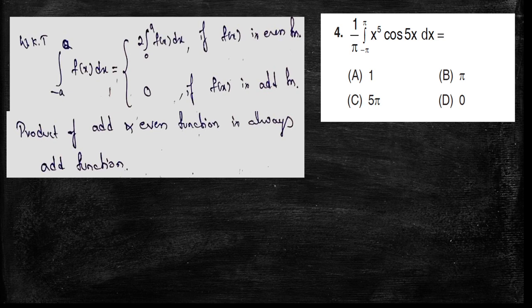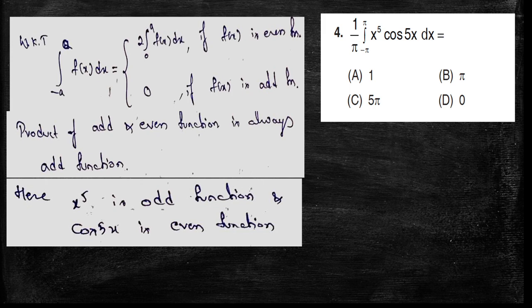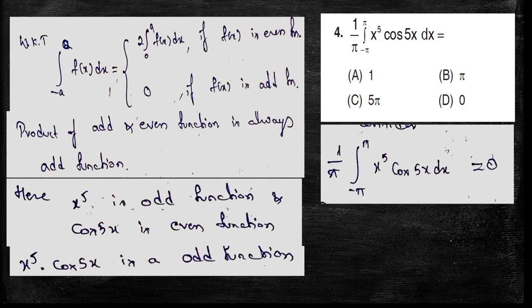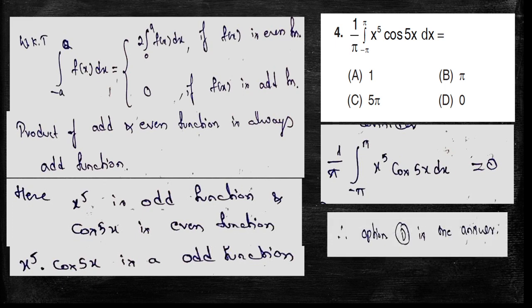The product of an odd and even function is always an odd function. For example, x is an odd function, x squared is an even function, and their product x cubed is an odd function. So observe that x to the power 5 is an odd function and cos(5x) is an even function. Therefore x^5 times cos(5x) is an odd function. For the integral from minus π to π, the value of an odd function integral is 0. So the correct answer is option D.